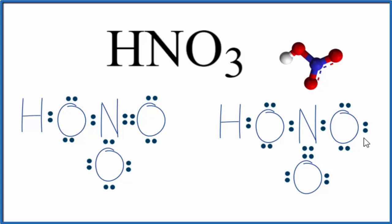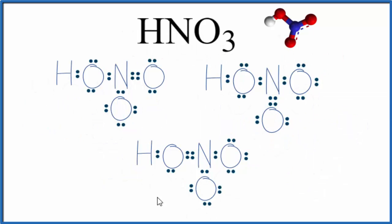The other way we could do this is instead of a double bond here or over here, we could move it between this oxygen here with the hydrogen. Let's do that. So now we have a structure where the double bond is between the nitrogen and the oxygen, the one attached to the hydrogen. So these are three different resonance structures.